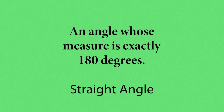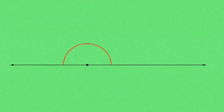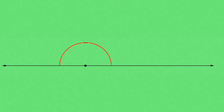Remember that all lines form straight angles, and those are angles whose measurements are 180 degrees. It is nice to remember that an entire circle is 360 degrees, so a line cuts a circle in half and has 180 degrees as the measurement of its angle.